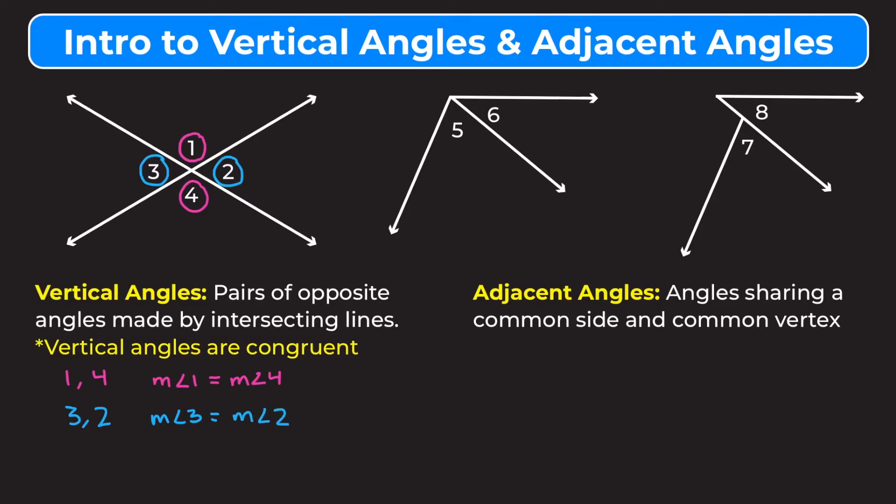Those are the only pairs of vertical angles in that diagram. We don't have any pairs of vertical angles in the next two diagrams because we don't have any lines that are fully crossing over each other. So now we're going to move on to adjacent angles. Adjacent angles are angles sharing a common side and a common vertex.